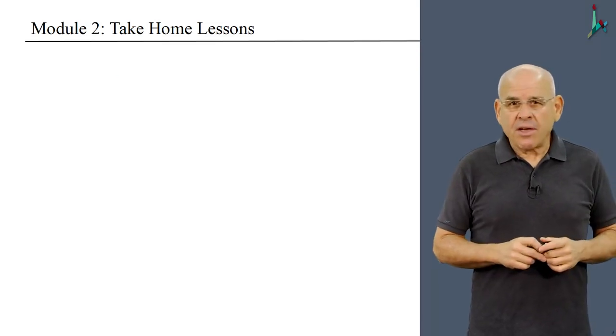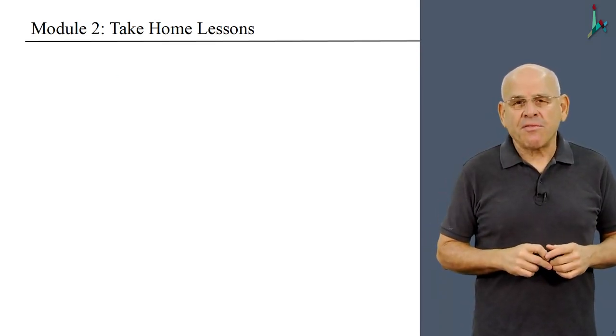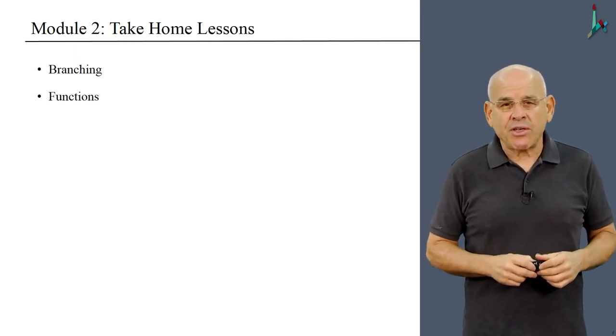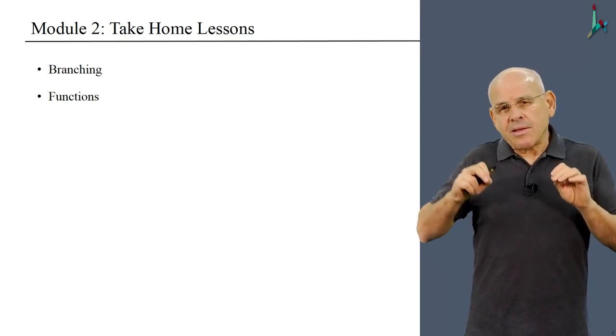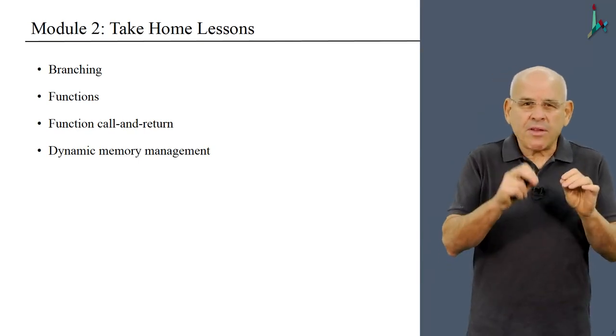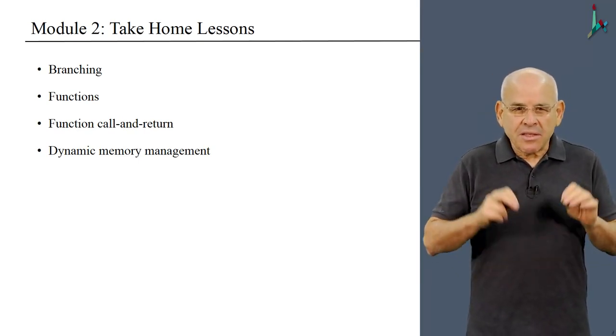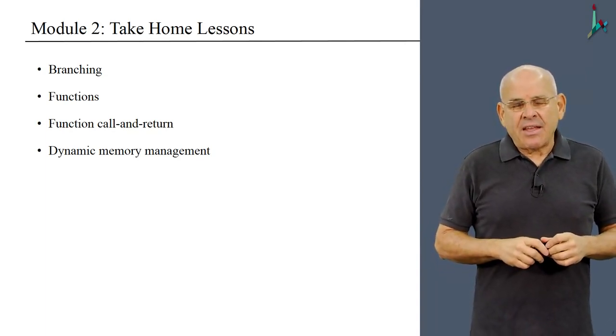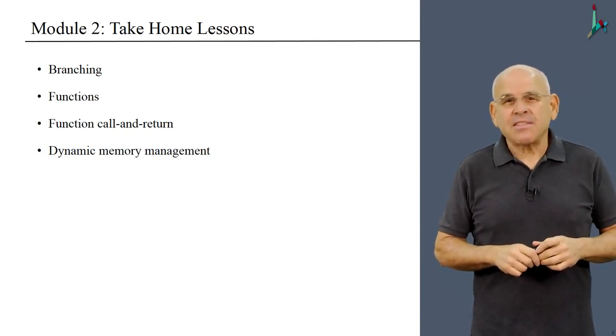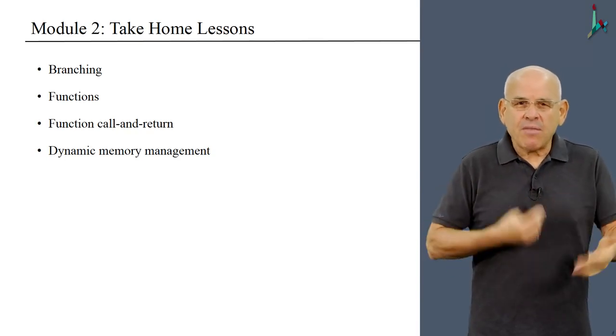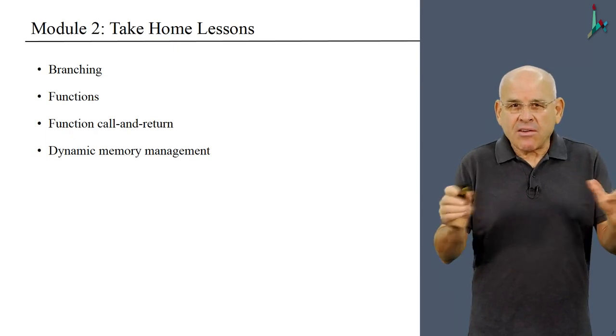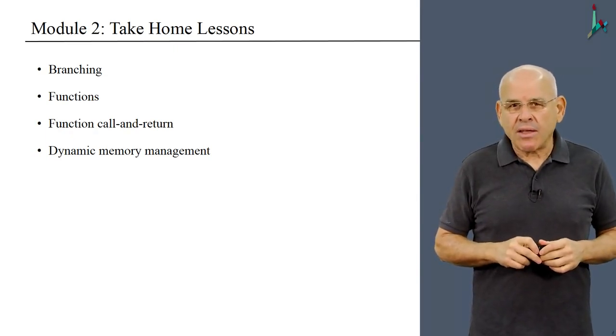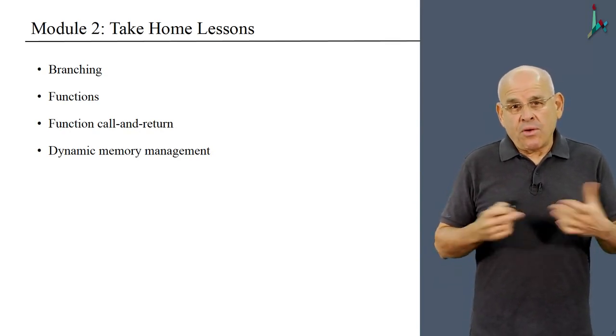All right, so in the course of learning all these new things, we'll go through some very important take home lessons. First of all, we will learn once again the abstraction and implementation of branching and function commands and you will understand how they actually work. We will spend a lot of time going through the function call and return dance, if you will, which is a very intricate and fascinating process that happens behind the scene. And in the process of running this dance, the computer also has to allocate memory to the main actors of this dance, which are the functions that are calling and returning from each other. So we'll have to understand how memory is allocated dynamically to executing functions.